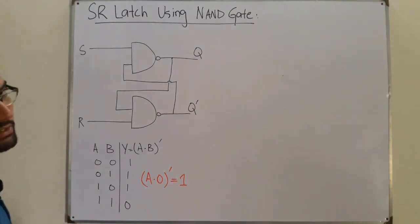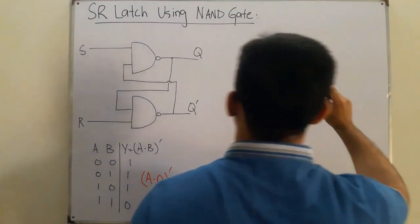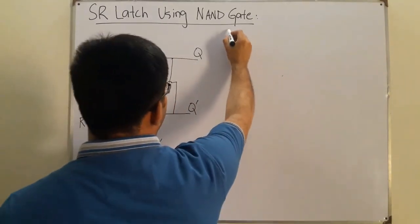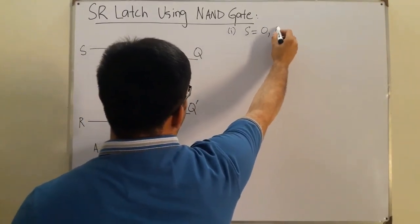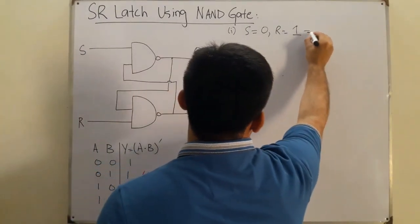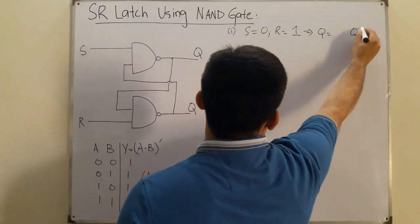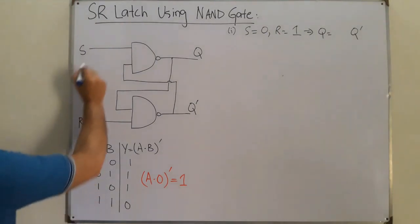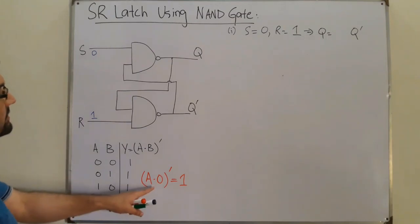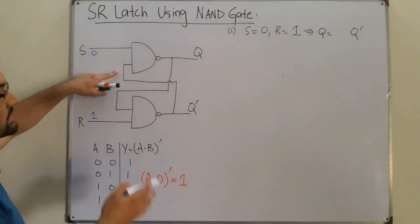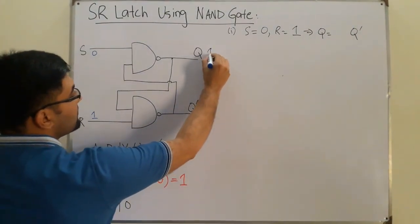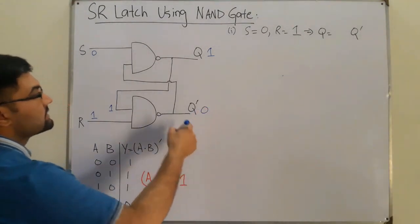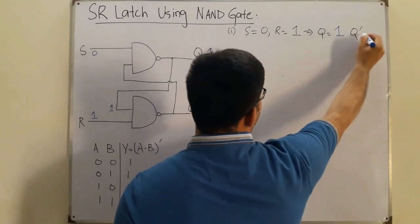Now we take different values of S and R. For the first case, let's say S=0 and R=1. From the property, anything NANDed with 0 gives 1, so Q is 1 in this case. This 1 is reflected as feedback, and 1 NAND 1 gives 0, so Q is 1 and Q complement is 0.